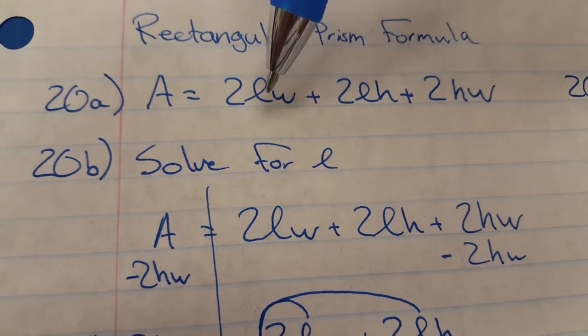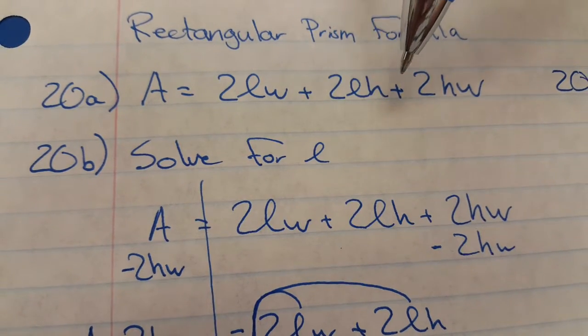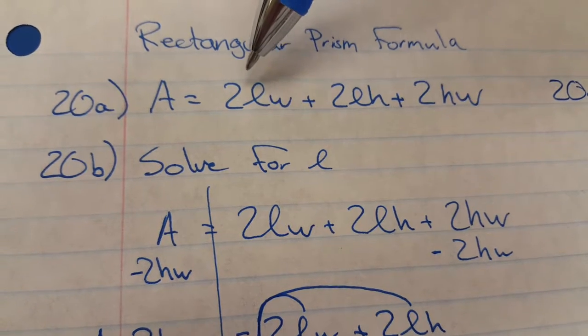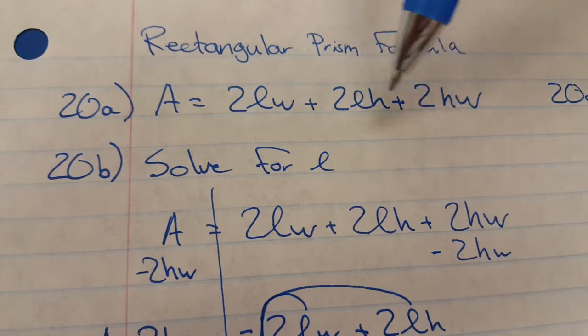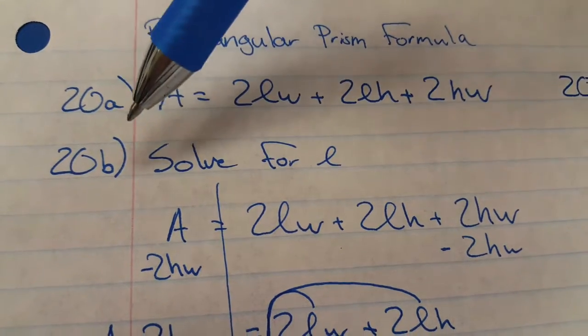So basically, like the front and the back, the left and the right, and then the top and the bottom, or anything you want to interchange. So here's the formula and then you got to solve it for L.